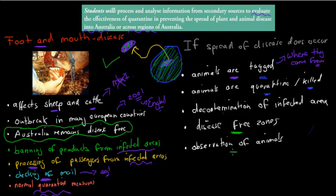There is also observation of animals. If we find that one animal might be infected - let's say a pig or a horse - then all pigs and horses would be observed to make sure that if there are symptoms, we can detect them quite early and remove any that have been detected to have the disease. These are measures in place so that if a disease does spread, we can get on top of it quickly and remove it quickly.